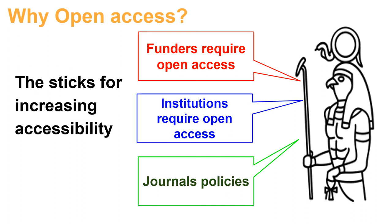It is gradually becoming mandatory that we make our research outputs open access. Funders in different countries and regions are now requiring immediate open access for publications and also outputs linked to these publications. These funders include UK Research and Innovation, the European Research Council, and also federal funders in the United States. Even if your funders don't yet say it is mandatory, making your research open access demonstrates that you know it is the way science is moving forward. Some institutions also have policies that require outputs to be open access. There are now an increasing number of open access only journals that require gold open access and have strict policies about open access to linked research outputs such as data.